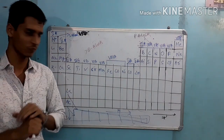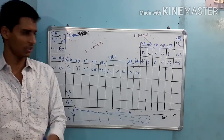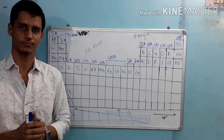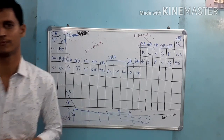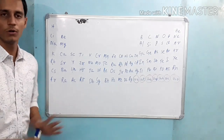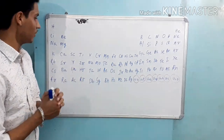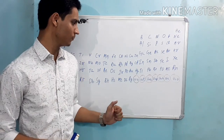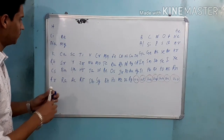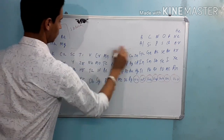The periodic table classification covers fun tricks. The periodic table has S block and D block classifications — this is how we organize the elements.